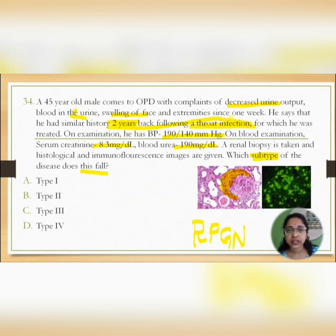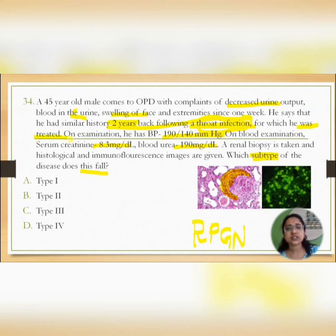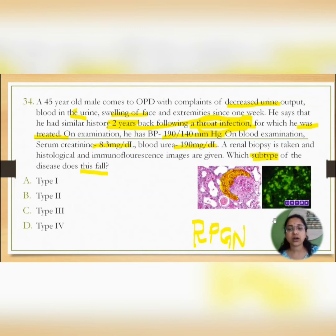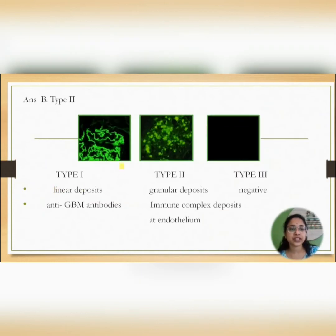In this question the clue of throat infection is given, and the patient was treated with antibiotics. This points to a diagnosis of PSGN — post-streptococcal glomerulonephritis — which is immune complex mediated. To confirm this, they have given the immunofluorescent image showing granular deposits. These granular deposits are characteristic of Type 2 RPGN. So the answer is Type 2 RPGN.